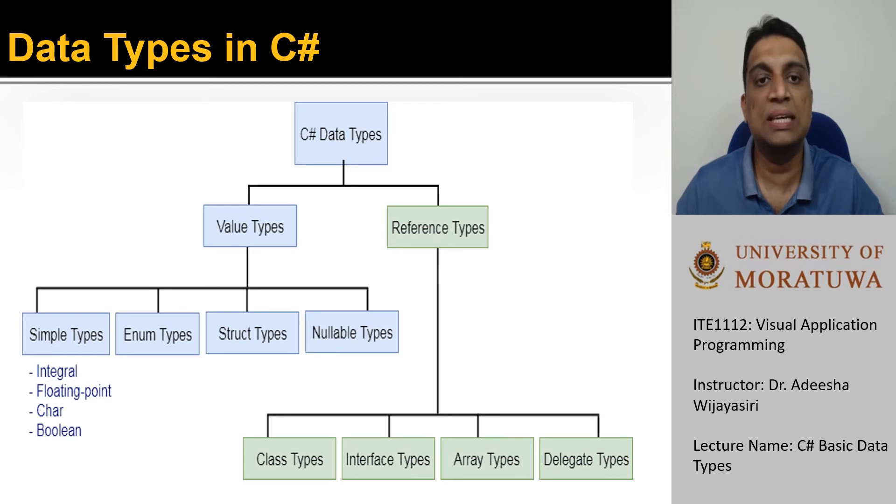Of course, there are many data types available other than basic data types in C sharp. As you can see in this slide, we have enum types, struct types, nullable types, as well as reference data types such as class types, array types etc. Throughout this course, we will be discussing many of these data types.